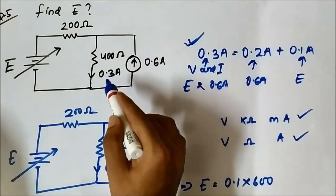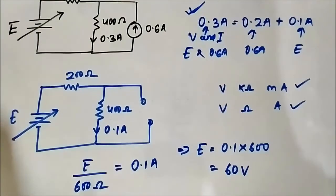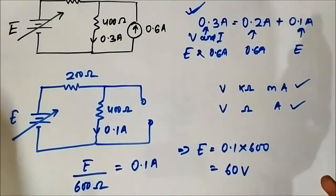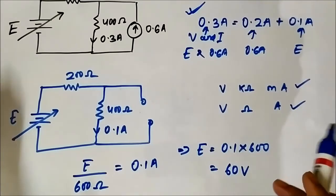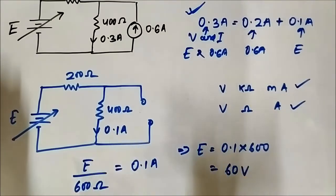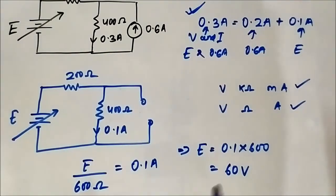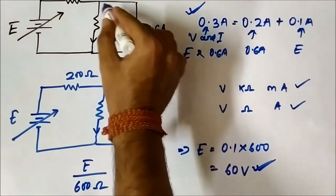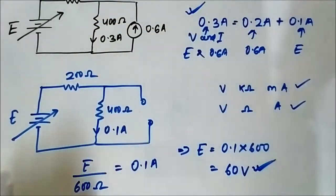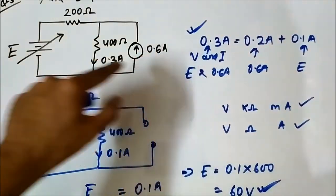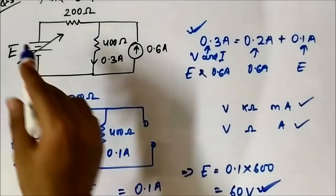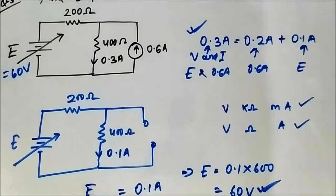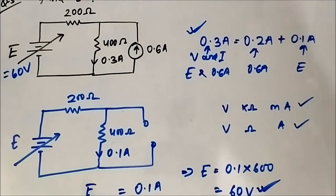So we got the answer: the value of the voltage source E, such that the current flowing through the 400 ohm resistor is 0.3 ampere, is 60 volts. At any point if you don't understand, please pause the video and try to follow along step by step. The value of E is 60 volts so that the total response — the current flowing through the 400 ohm resistor due to both E and the 0.6 ampere current source — is 0.3 ampere. I hope you liked this video. Please subscribe to Engineering Tutorial for more videos related to electrical, electronics, instrumentation, and communication engineering. Thank you very much.